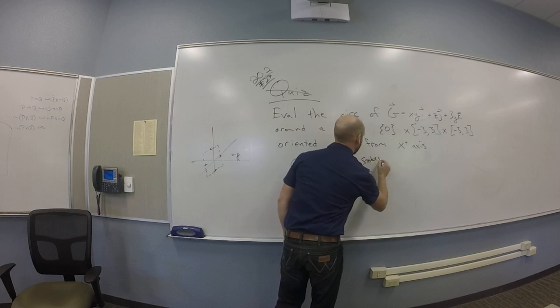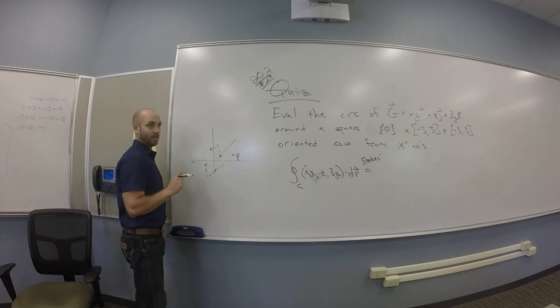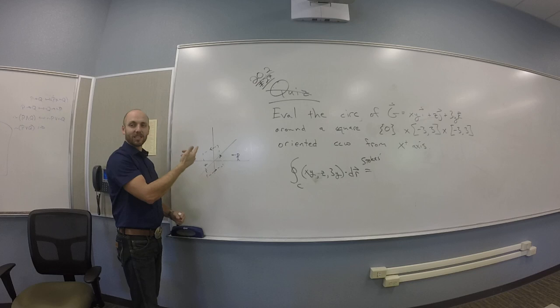So first things first, to apply Stokes, what do I need? Clockwise, piecewise smooth everything, basically. Okay. So I should check piecewise smooth everything. The curve is pretty clearly piecewise smooth. Yeah. Where the heck is the surface for which that's the boundary? The square.